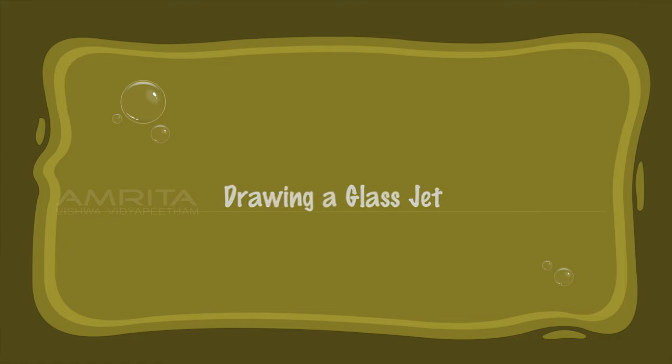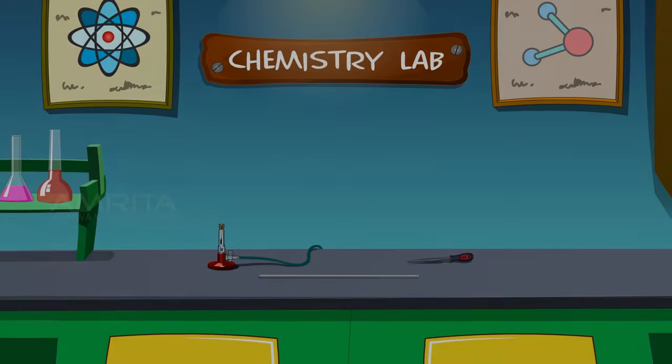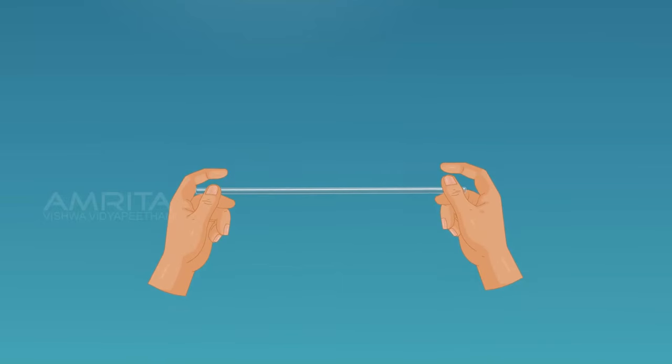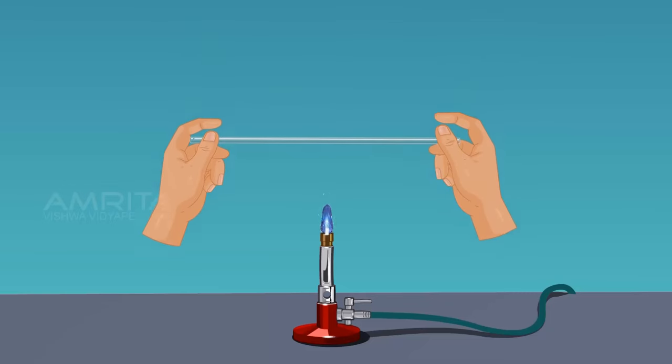Drawing a Glass Jet. We require a Bunsen burner, a glass tube of required length and a triangular file. Take a glass tube of required length, hold it with both hands, and place it lengthwise in the flame.